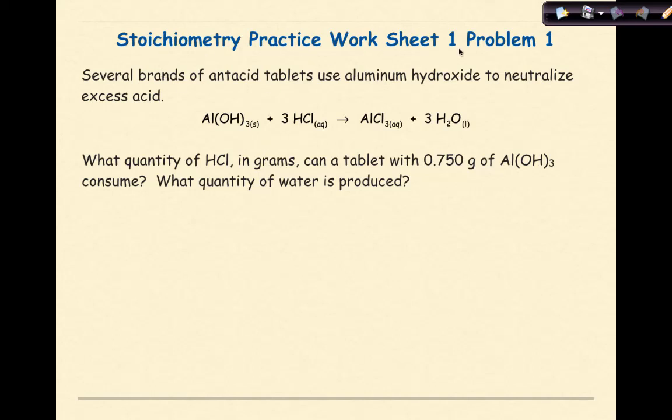Stoichiometry Practice Worksheet Number 1, Problem 1. Several brands of antacid tablets use aluminum hydroxide to neutralize excess acid. Here we have a chemical equation showing aluminum hydroxide reacting with 3 moles of hydrochloric acid to produce aluminum chloride and 3 moles of water. What quantity of HCl in grams can a tablet with 0.750 grams of aluminum hydroxide consume? What quantity of water is produced?